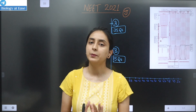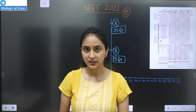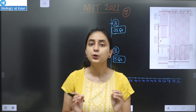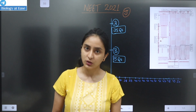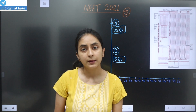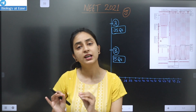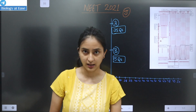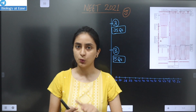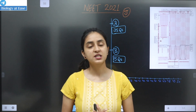NEET 2021 paper pattern — you all know. This time, there will be 200 questions in your NEET exam, from which you have to attempt a maximum of 180 questions. Physics, Chemistry, Botany, Zoology — your paper is divided into 4 subjects.